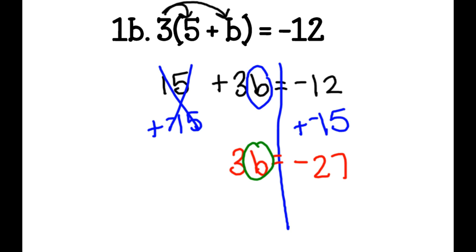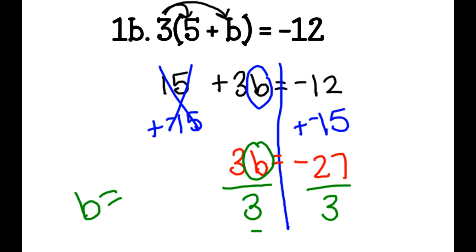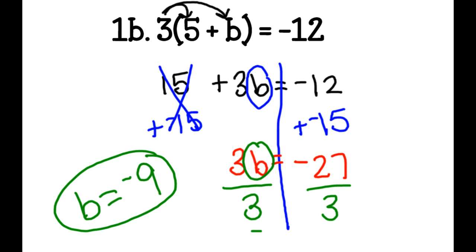Negative 12 plus negative 15 is negative 27. Then I divide both sides by 3, and b equals negative 27 divided by positive 3, which gives me negative 9. I circle it, and that's my answer.